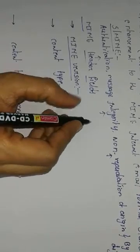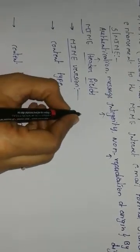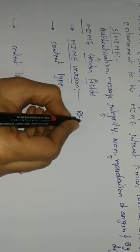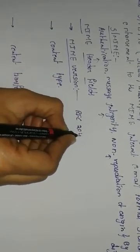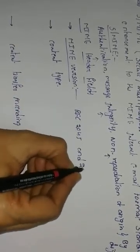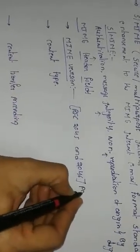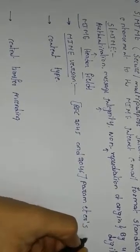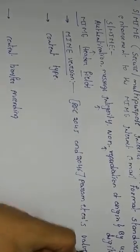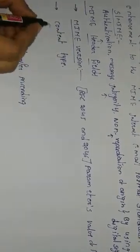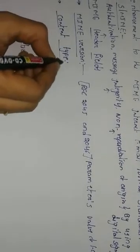The MIME version is a required header indicating that the message conforms to the RFC specification. It specifies which version we are using, with a parameter value of 1.0.